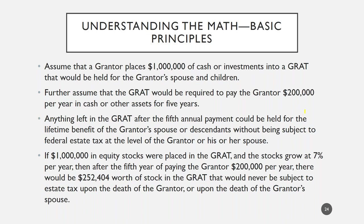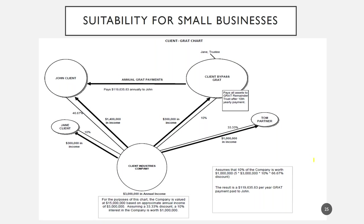Using some other numbers: if you placed $1 million of cash in a GRAT and the grantor took back $200,000 per year in cash or other assets for five years, then at the end of the term you'd have approximately $252,404 remaining in the GRAT, assuming the assets grew at 7%. This would result in some gift tax due on funding, but not very much — certainly less than the $252,404 that would pass to beneficiaries.